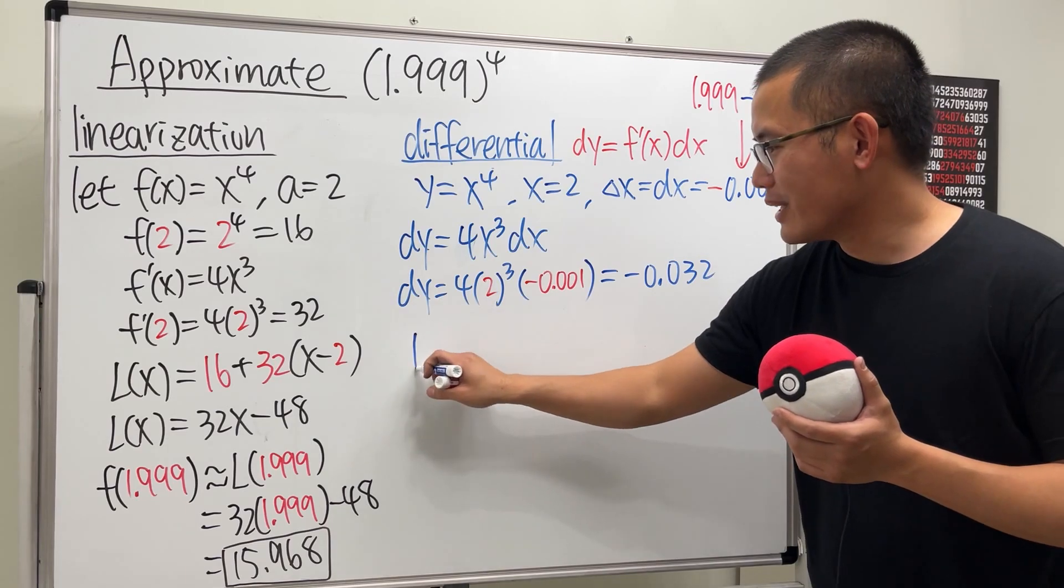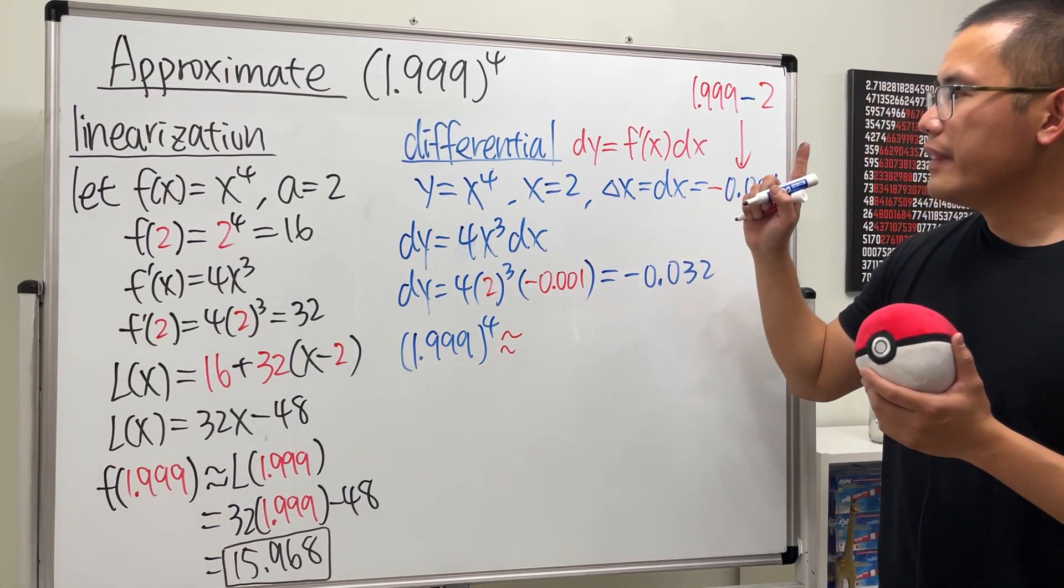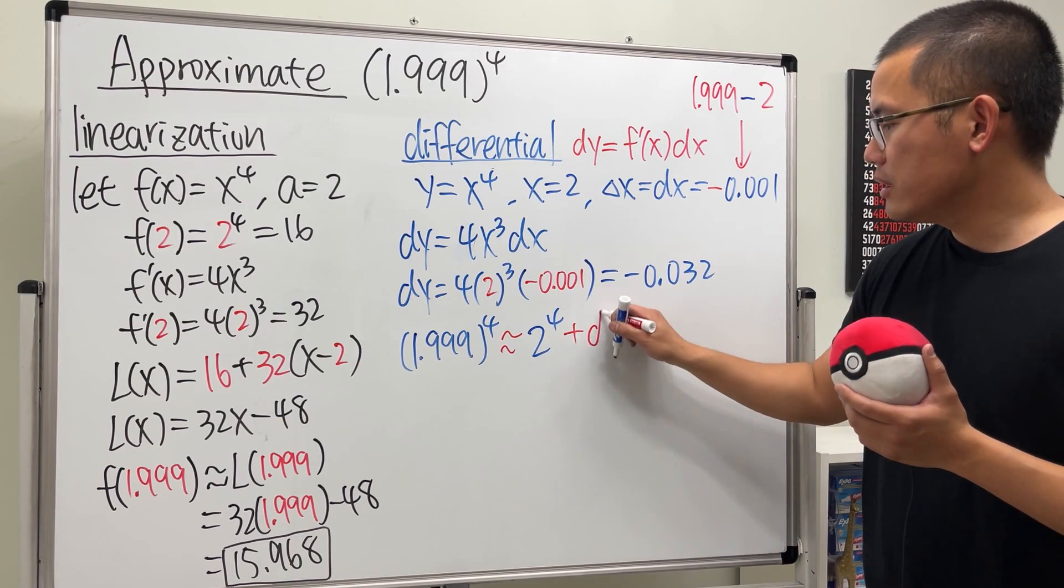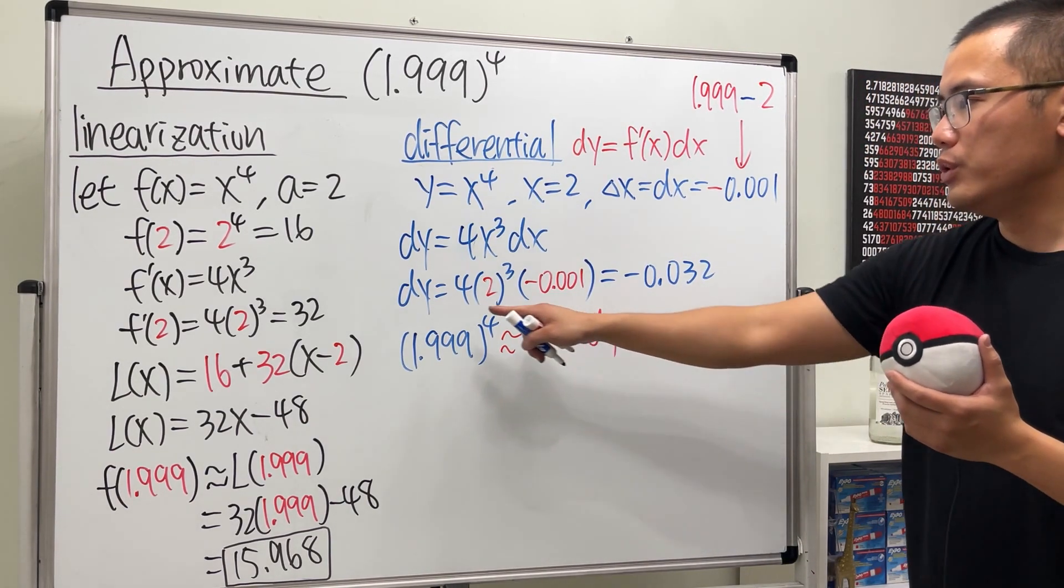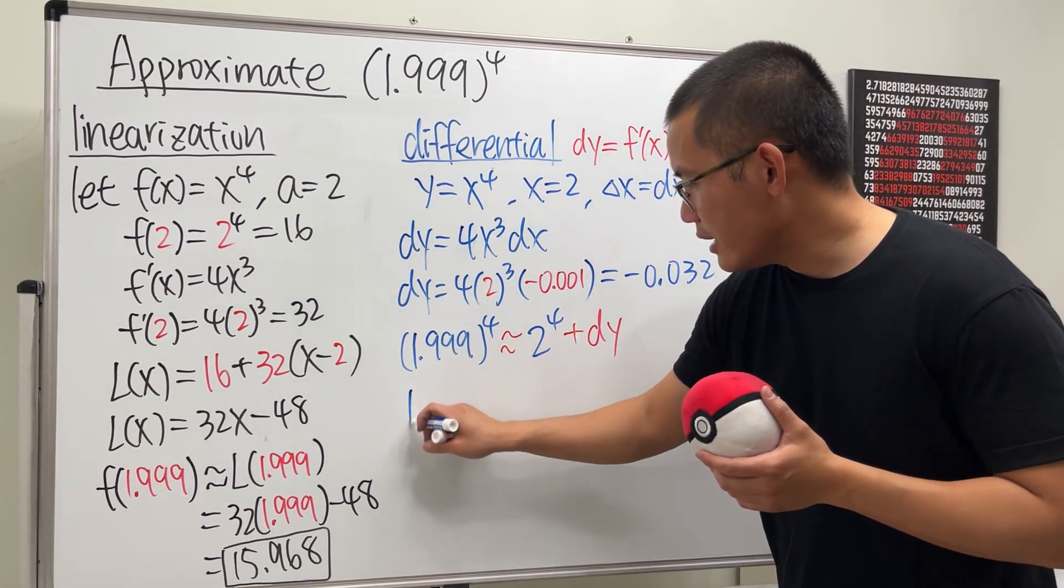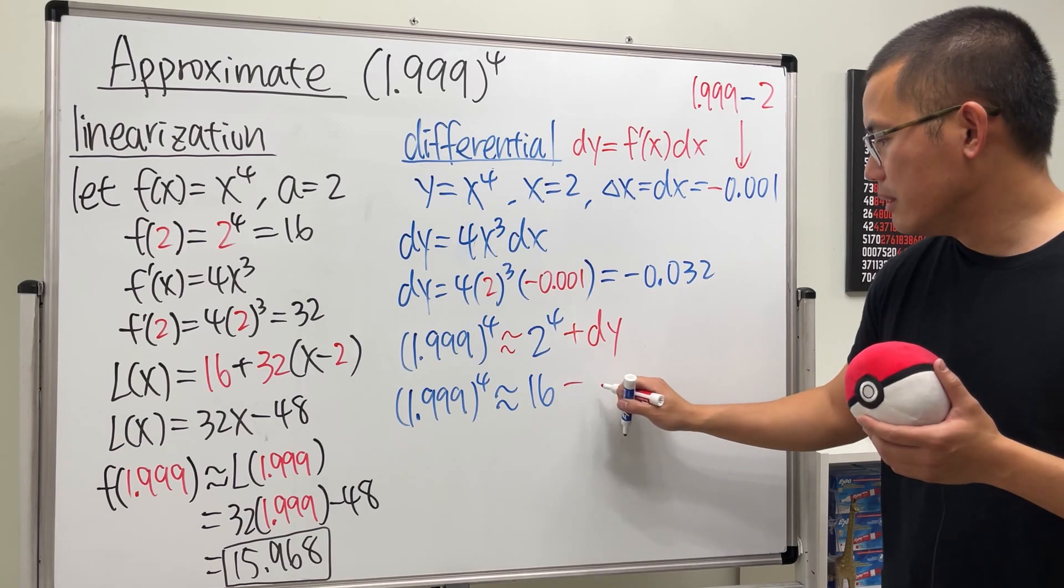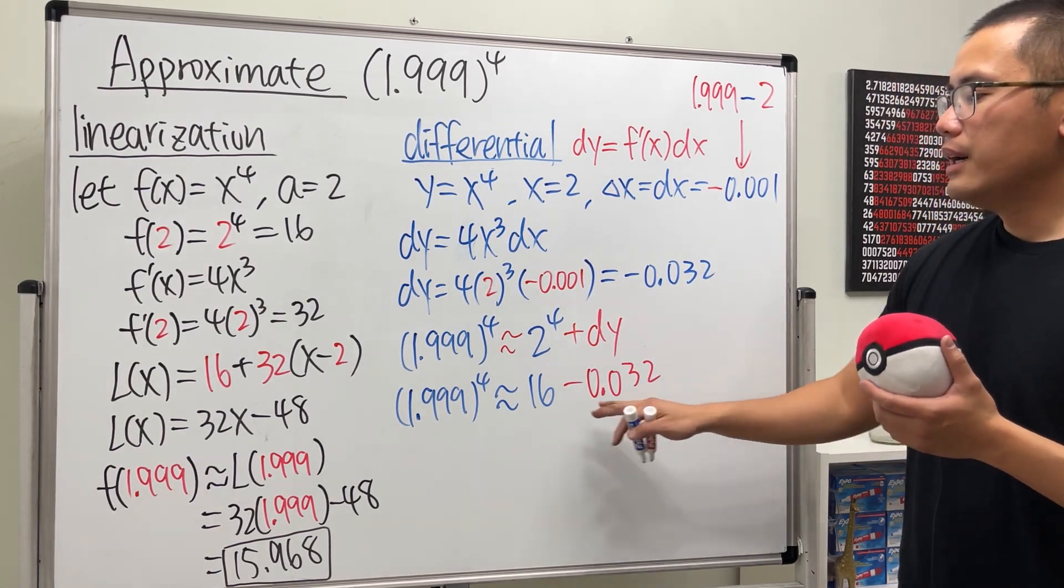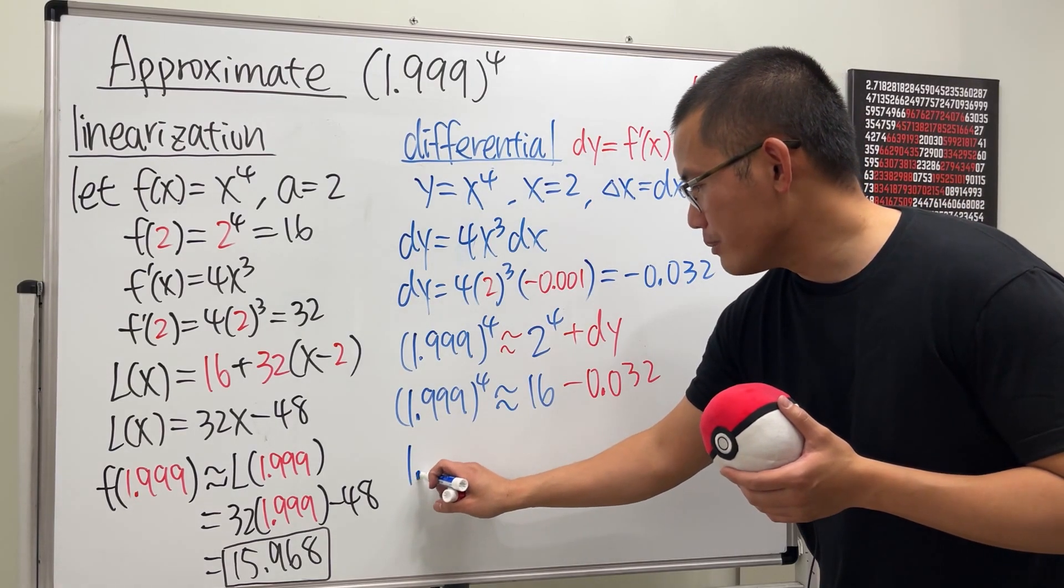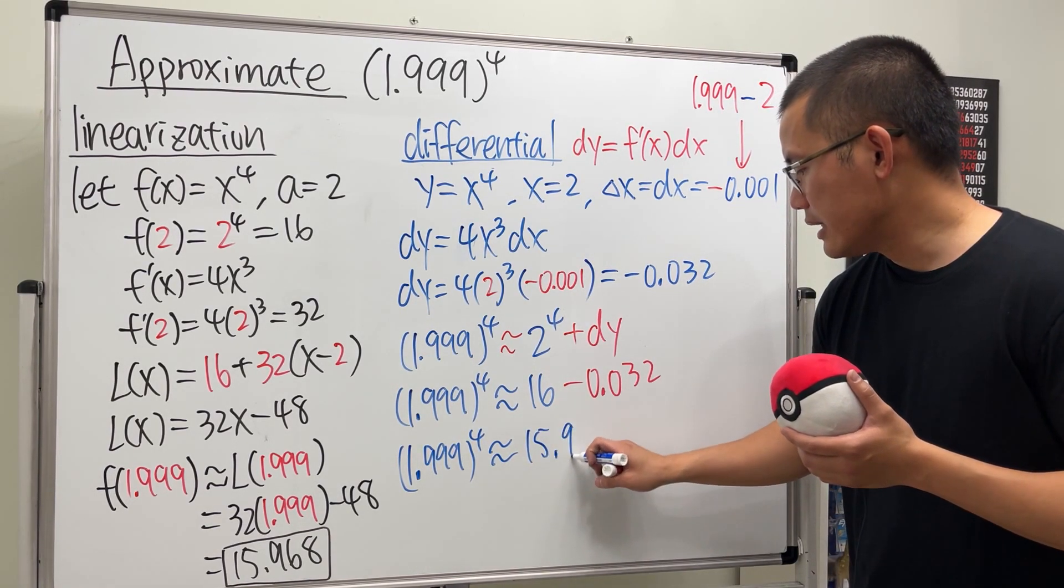This is 32 multiplied by that, which is -0.032. With all this, we are in business. We can approximate this. Let's write this down: 1.999^4 is approximately equal to the y value that we know much better, which is 2^4, and then we just have to add the change in y. But this is just the approximate change because we use the derivative, and this is so much easier to find compared to the exact change. 1.999^4 is approximately 16, and then dy is -0.032. I think this approach is easier to conclude. Ladies and gentlemen, 1.999^4 is approximately 16 - 0.032, which is 15.968.